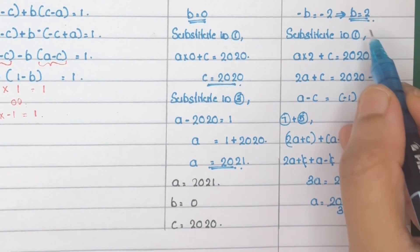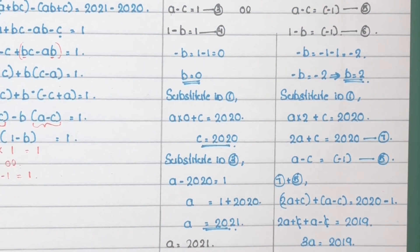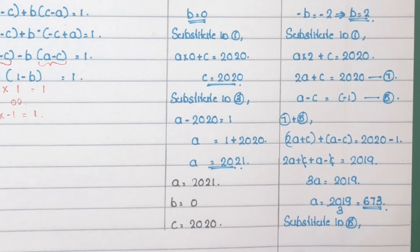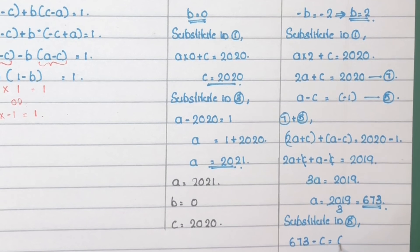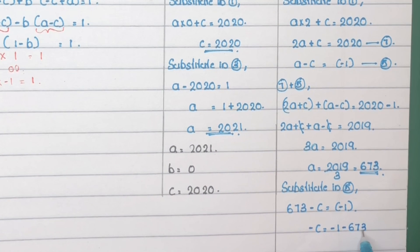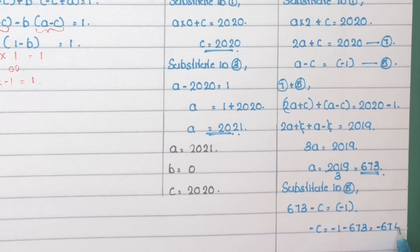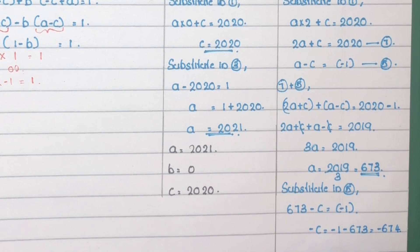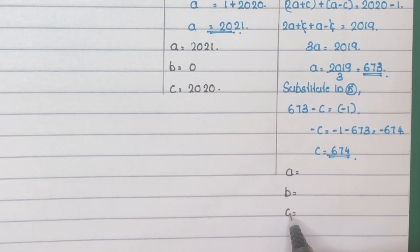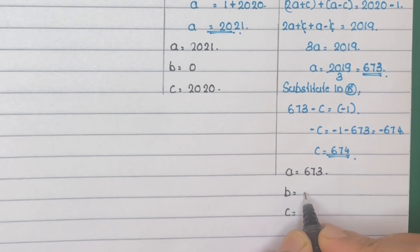Now find C by substituting A equals 673 into equation 5: 673 minus C equals minus 1. So minus C equals minus 1 minus 673, giving minus C equals minus 674, which means C equals 674. Therefore, the values for the second condition are: A equals 673, B equals 2, and C equals 674.